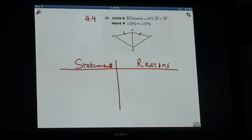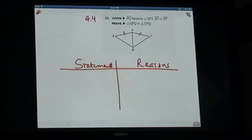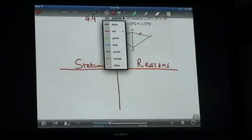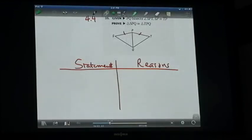Then it says PQ bisects angle SPT. That is given and the only way to mark that is that they're congruent, but the fact that they're congruent is not given. It follows from bisection. So we're going to do that in a different color because it's not really given. I'll put that in green.